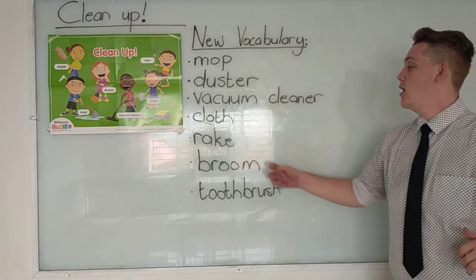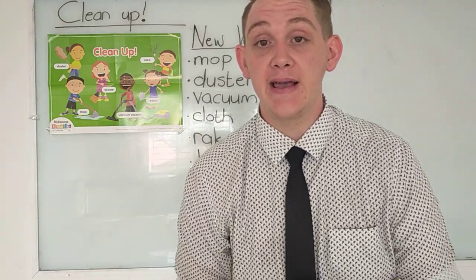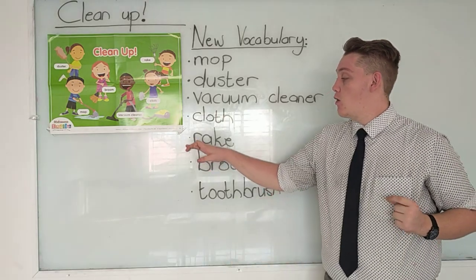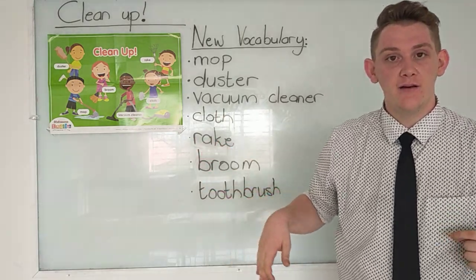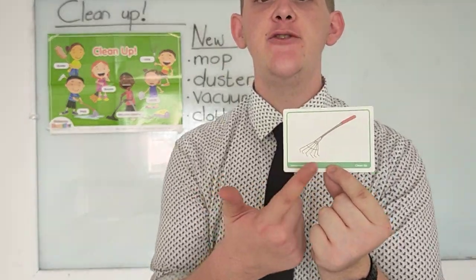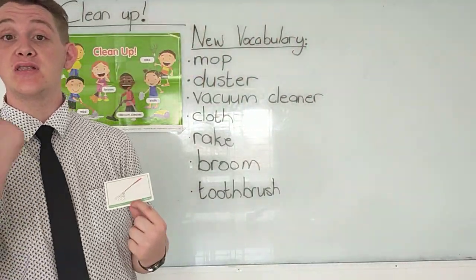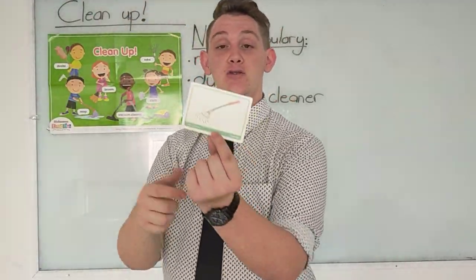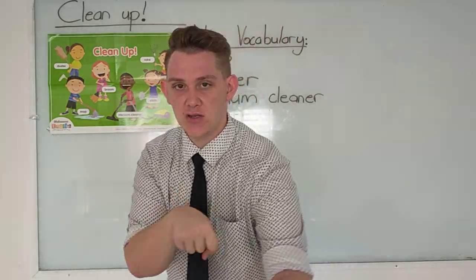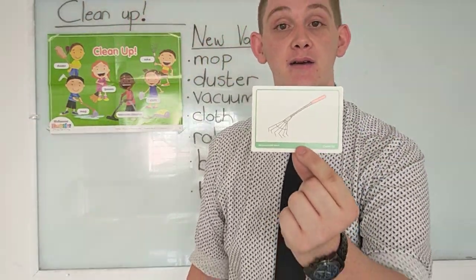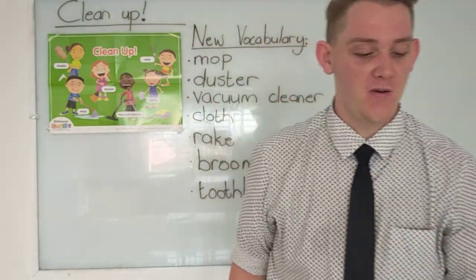Let's get to our next one: rake. Easy to say — rake. Now what is a rake? A rake looks like this, and we use the rake to clean up all the leaves on the ground outside. When tree leaves fall, we use the rake to bring the leaves closer together so we can put them in a trash bag and throw it away.